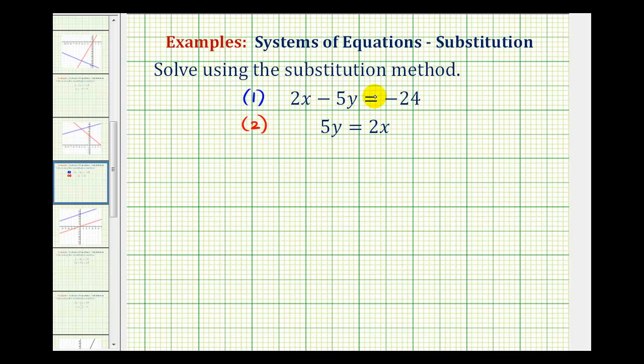Now the first step in solving a system using the substitution method is to solve one of these equations for one of the variables. Looking at the second equation, we could solve this for y if we divided both sides by five. So if we divide the left side by five and the right side by five, notice how we would now have the equation y equals two-fifths x.